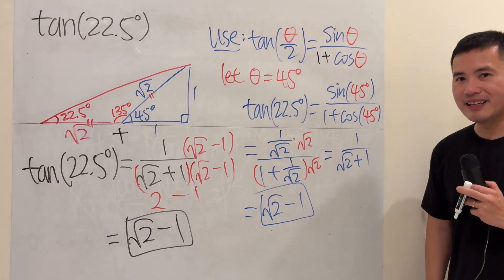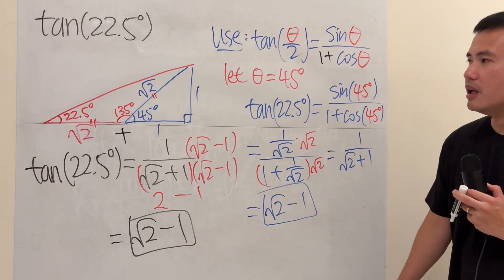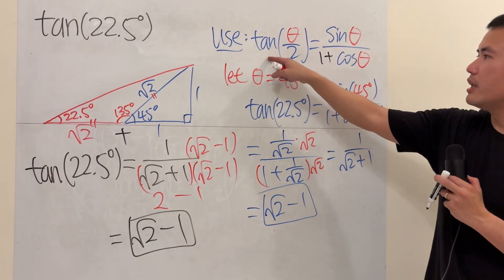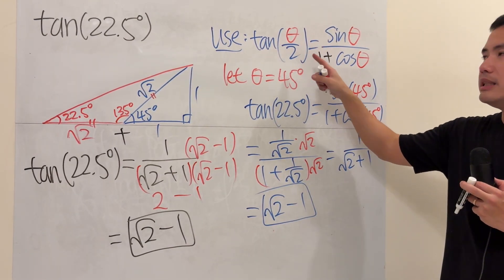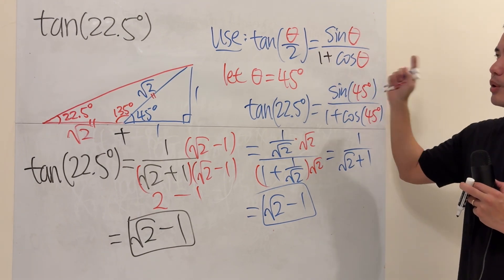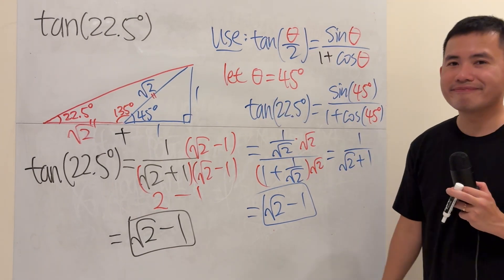Very nice, huh? Now, here's a small challenge for you guys. Can you use this strategy to prove that tangent of theta over 2 is equal to sine theta over 1 plus cosine theta? Just that. That's it.